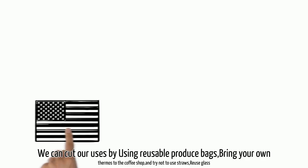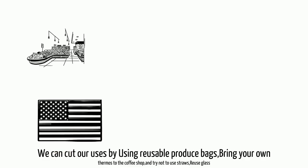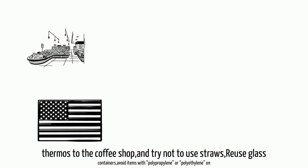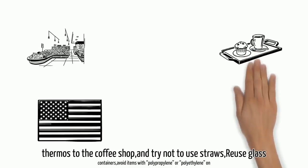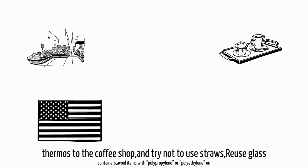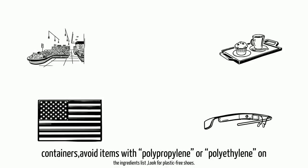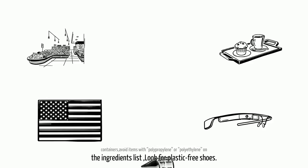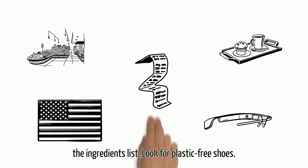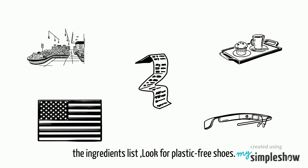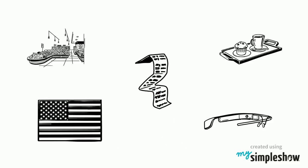We can cut our use by using reusable produce bags, bringing your own thermos to the coffee shop, and trying not to use straws. Reuse glass containers, avoid items with polypropylene or polyethylene on the ingredients list, and look for plastic-free shoes.